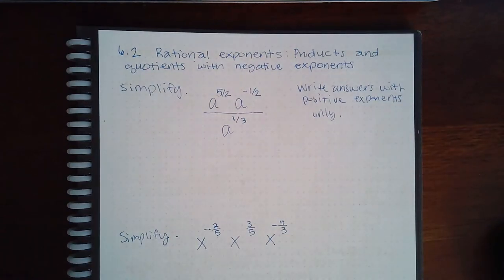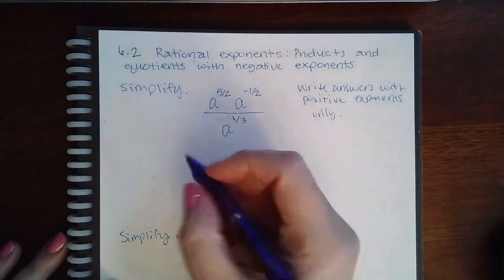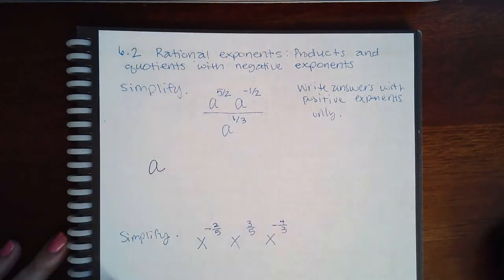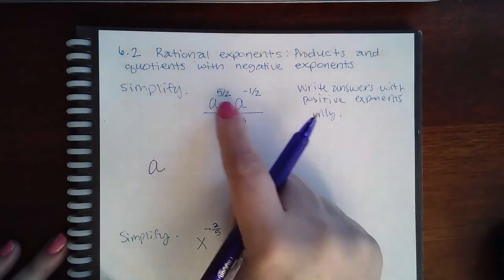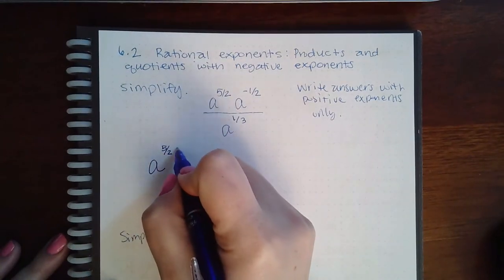Here we have rational exponents, products and quotients with negative exponents. Write your answers with positive exponents only. Since they all have the same base, I'm going to end up with the base a. Remember, for products you will take the exponents and you will add.